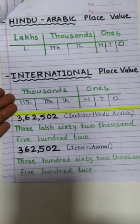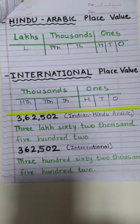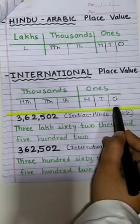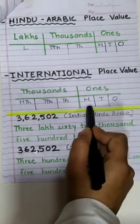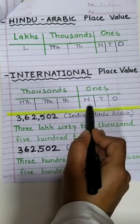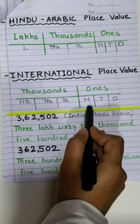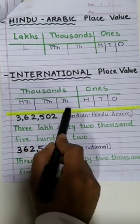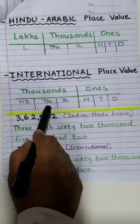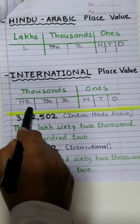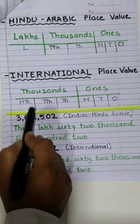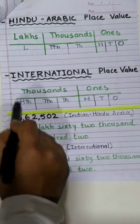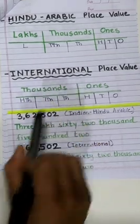Whereas in international place value system, the ones column remains the same: ones, tens, hundreds. But the thousands column gets divided into 3 parts: thousands, ten thousands and hundred thousands. We don't have lakhs column in international place value system.